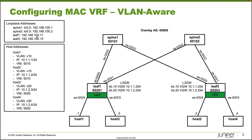Here is our topology. We have a data center using an IP fabric and all the BGP underlay and overlay is already configured, so you don't have to worry about that. We have spine 1, spine 2, leaf 1, leaf 3, and hosts 1 through 4. Host 1 and host 3 connect to leaf 1, and host 2 and host 4 connect to leaf 3.